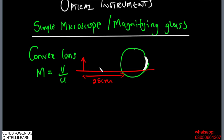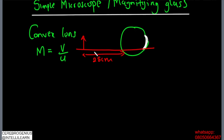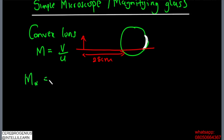This brings us to the concept of angular magnification, because angular magnification is very important when dealing with optical instruments. The angular magnification of a body is the ratio of the angle subtended by the body when you use an instrument, to the angle subtended by that body at the eye when you don't use any instrument to view the object.